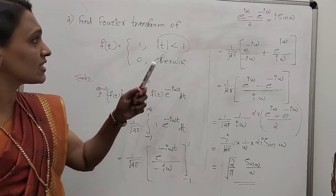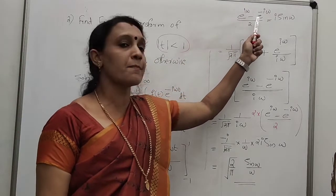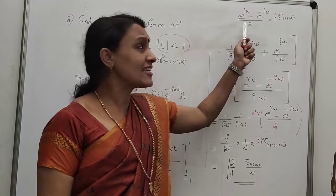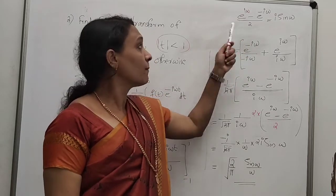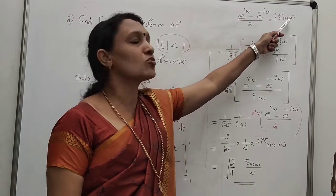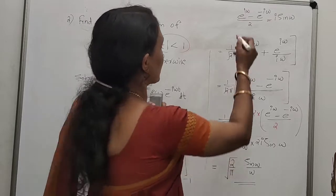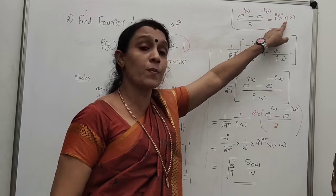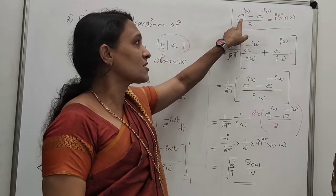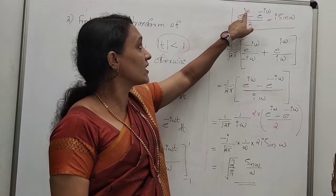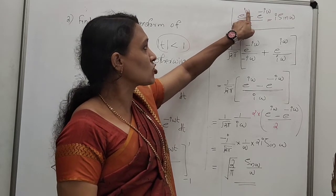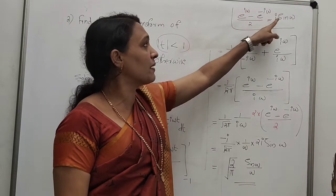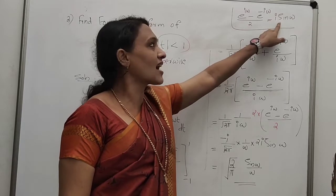We use the result: (e^(iω) - e^(-iω))/2 = i·sin(ω), which is the complex exponential definition of sine. Also recall that 1/i = -i. So multiplying and dividing by 2, we replace (e^(iω) - e^(-iω))/2 with i·sin(ω).